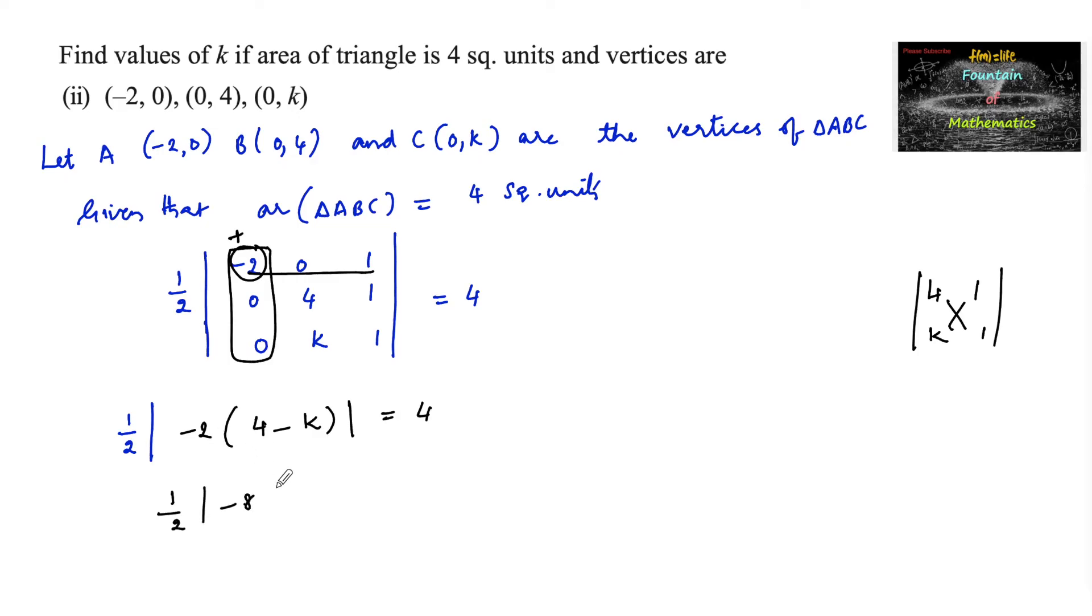Or 1 by 2 times minus 8 plus 2k, which simplifies to 2k minus 8. The modulus of 2k minus 8 is equal to 8.